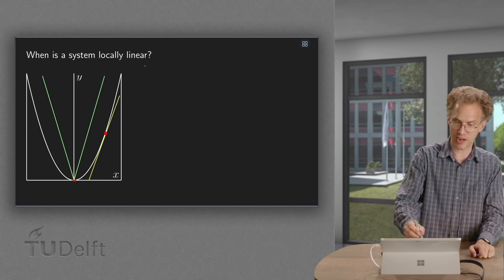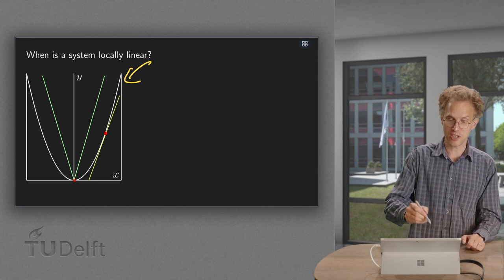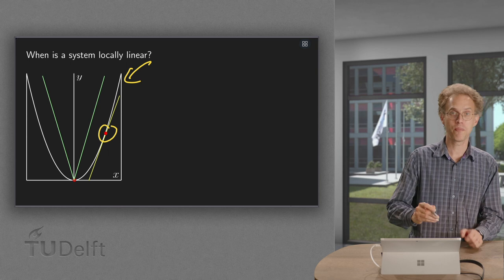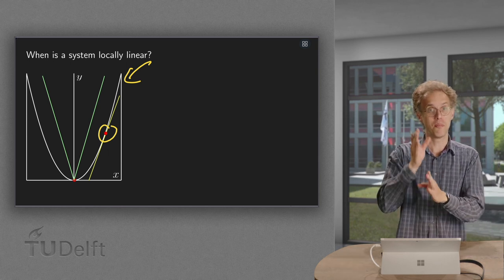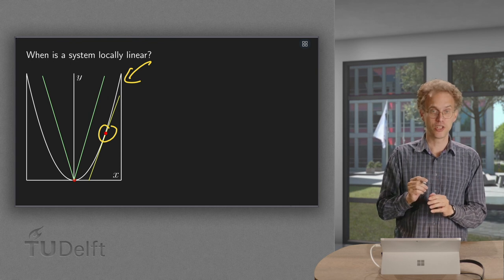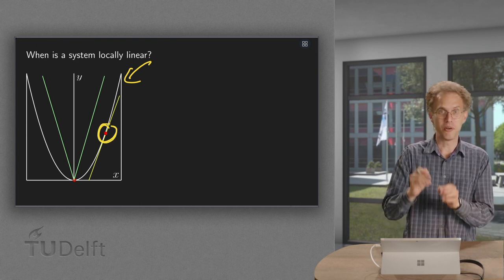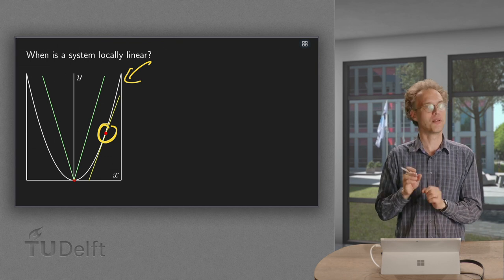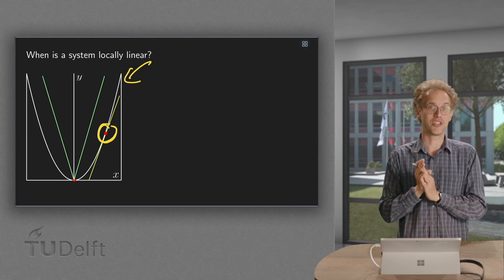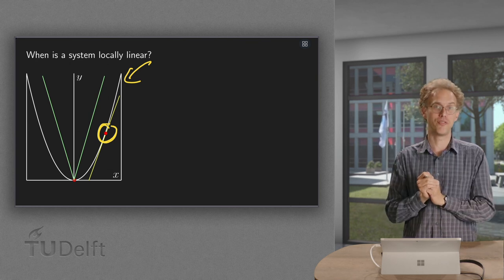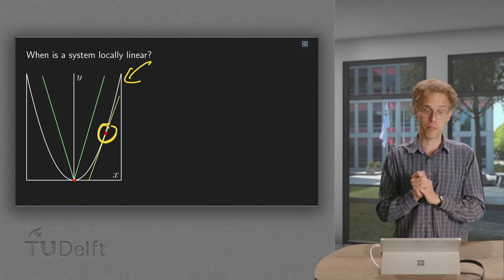So first of all, through this parabola, locally linear means that about a point — say this one — we can really approximate our parabola by its tangent line. So close to this red point over here, you cannot see a difference anymore between the tangent line and the parabola. Then, if that's the case, you call a function locally linear. A parabola at any point is an example of that.